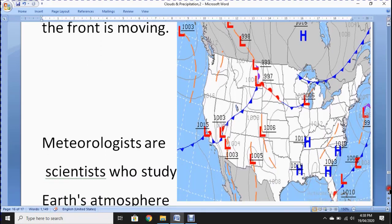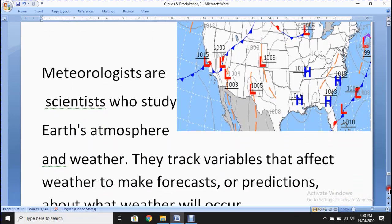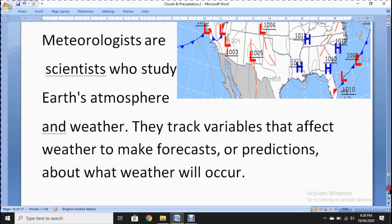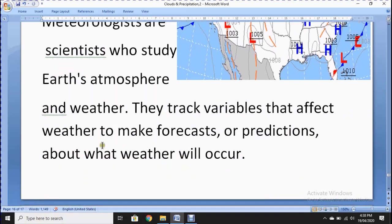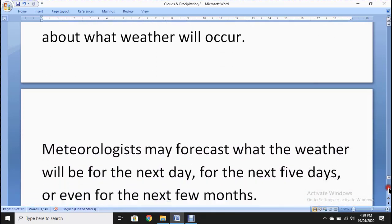Meteorologists are scientists who study earth's atmosphere and weather. They track variables that affect weather to make forecasts or predictions about what weather will occur. They predict with the help of these variables. The weather should be humid, dry or whether the sky will be clear or have some clouds. Forecasts tell us these predictions with the help of variables.